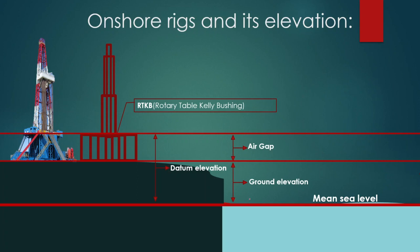As we can see, the ground elevation is the distance between the Mean Sea Level and the ground surface — the surface of the Earth where we are placing our rig or our site.